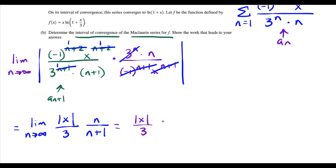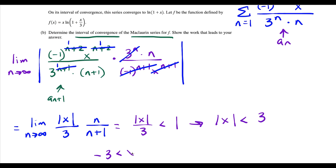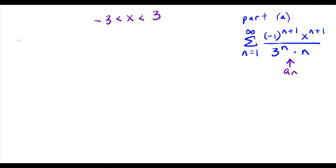The ratio test will only show convergence when the limit itself works out to something less than 1. So this implies that the absolute value of x, if we multiply both sides by 3, has to be less than 3. This gives us a preliminary interval of convergence: negative 3 is less than x, which is less than positive 3. For the last two out of five points for part B, we're going to have to investigate the endpoints.